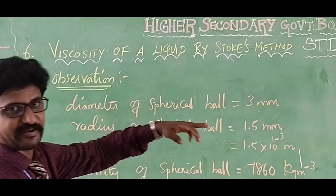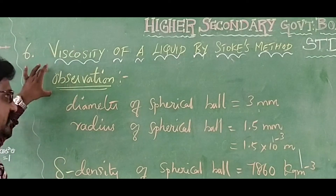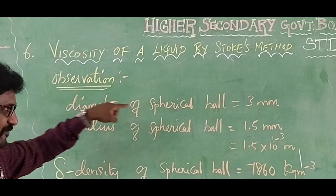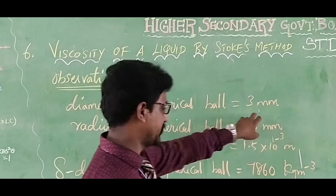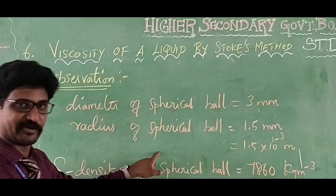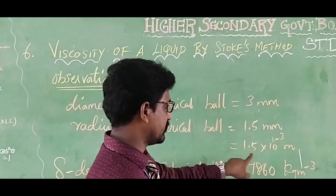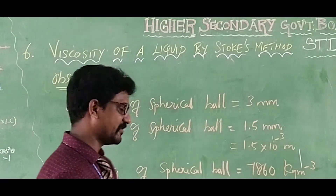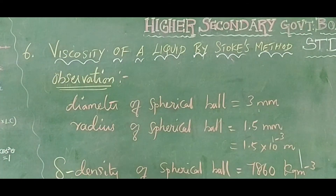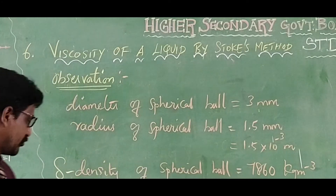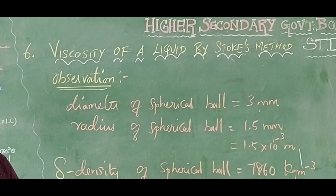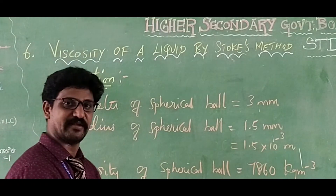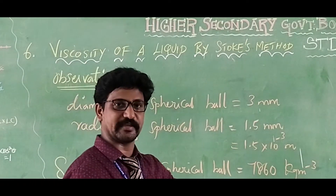Before the final calculation of eta, our observations are: the diameter of the spherical ball measured using screw gauge is 3 millimeters, so the radius r of the spherical ball is 1.5 millimeters, which is 1.5 × 10⁻³ meters. The density of the steel sphere rho is 7860 kilograms per meter cube. Sigma, the density of the experimental liquid castor oil, is 970 kilograms per meter cube.